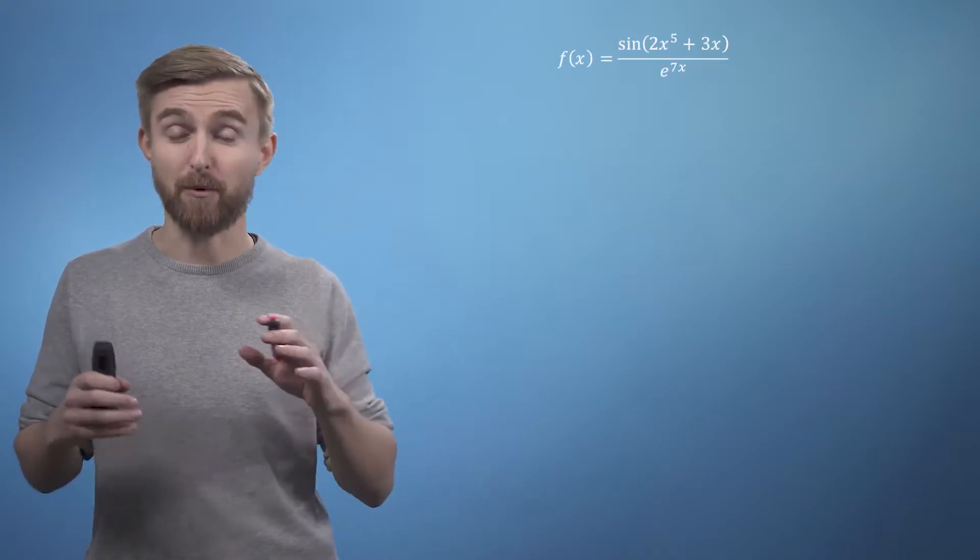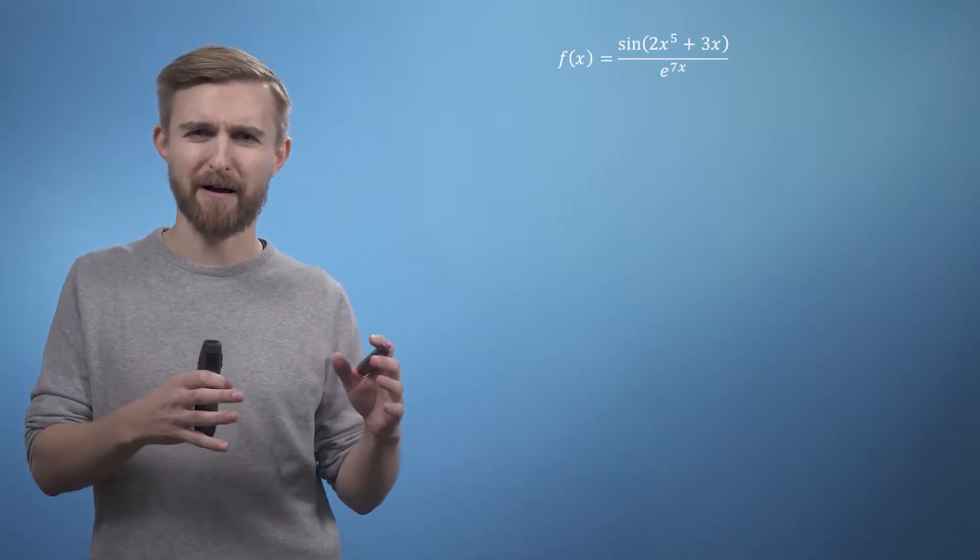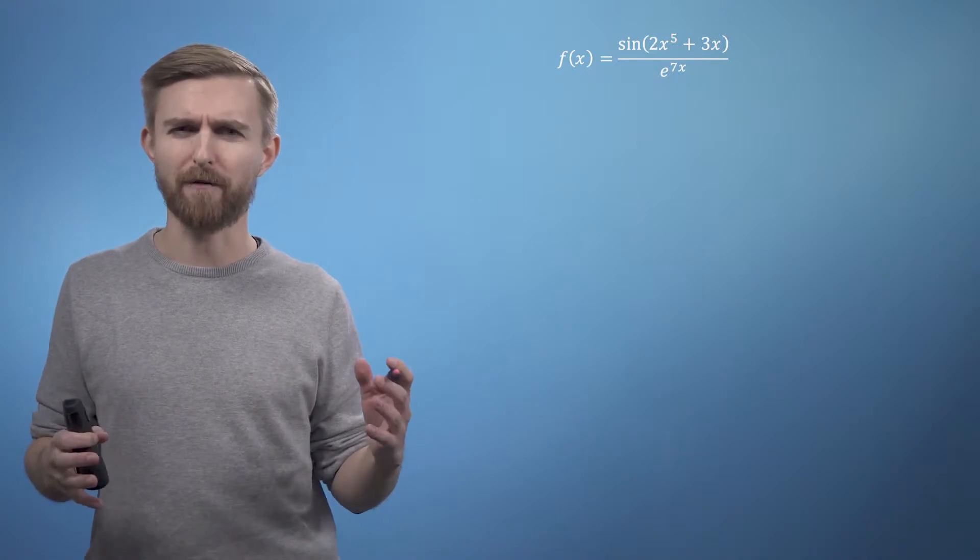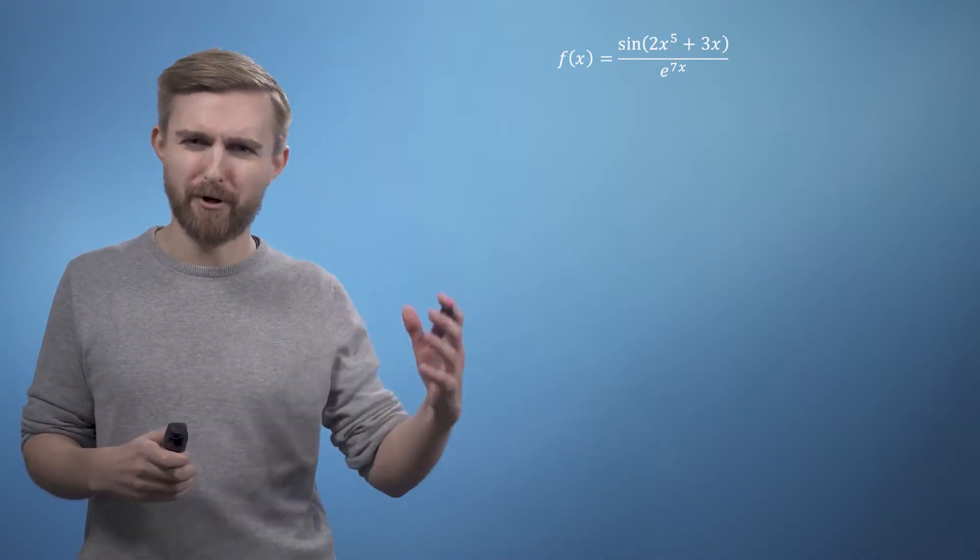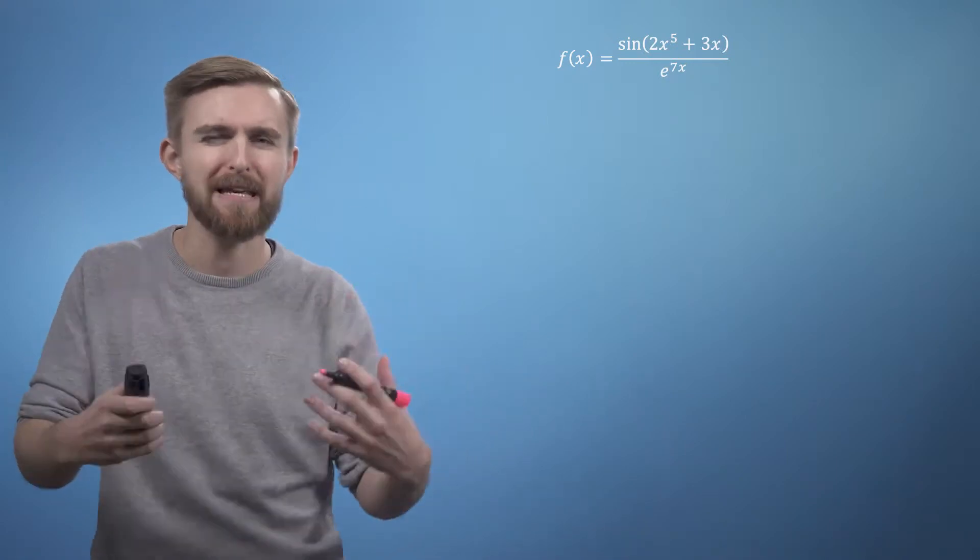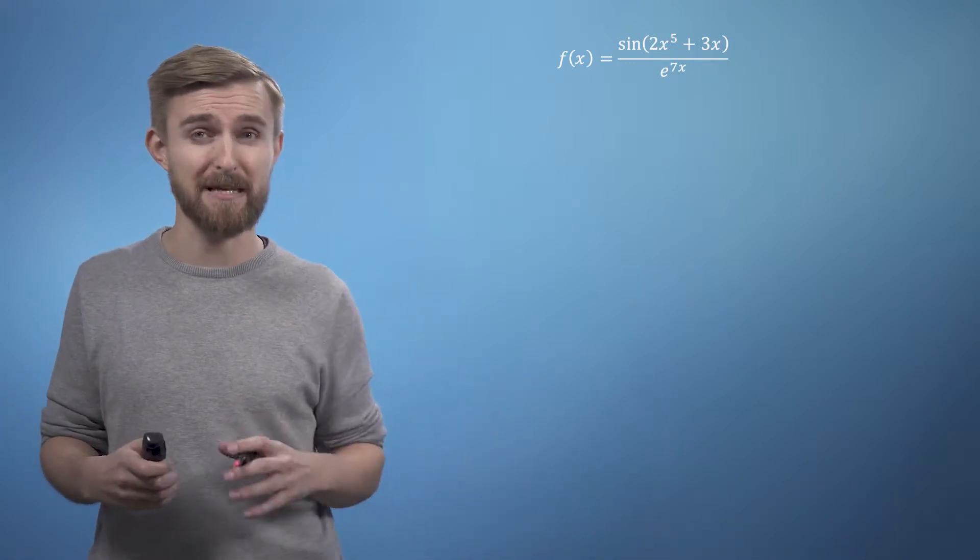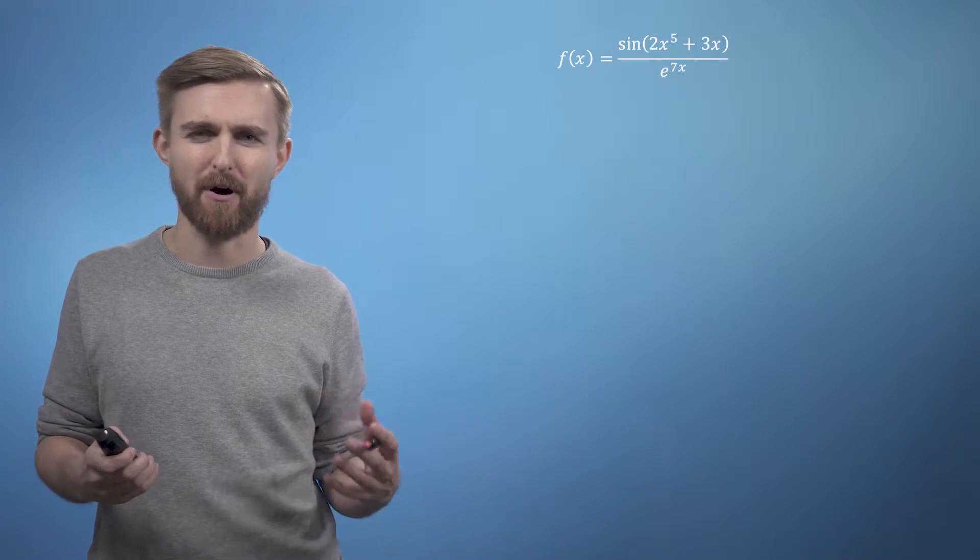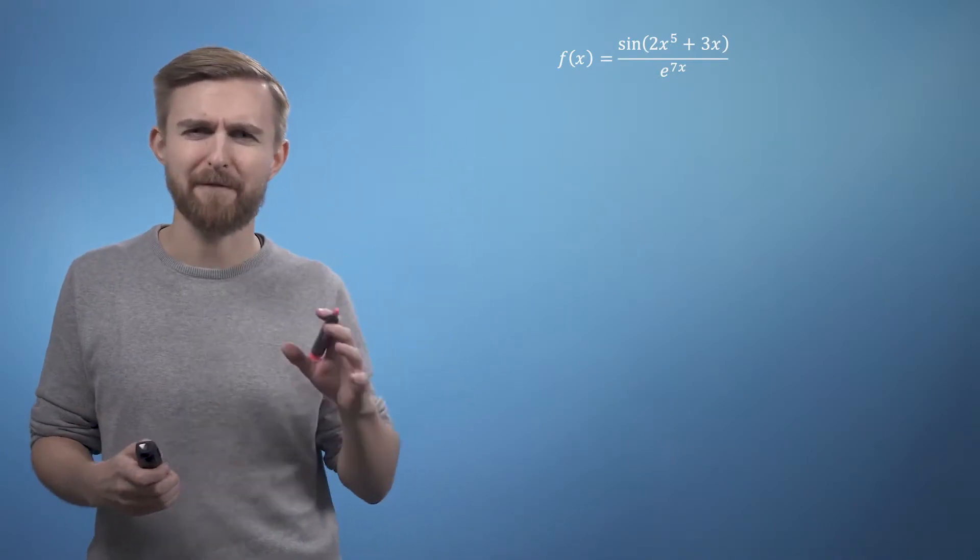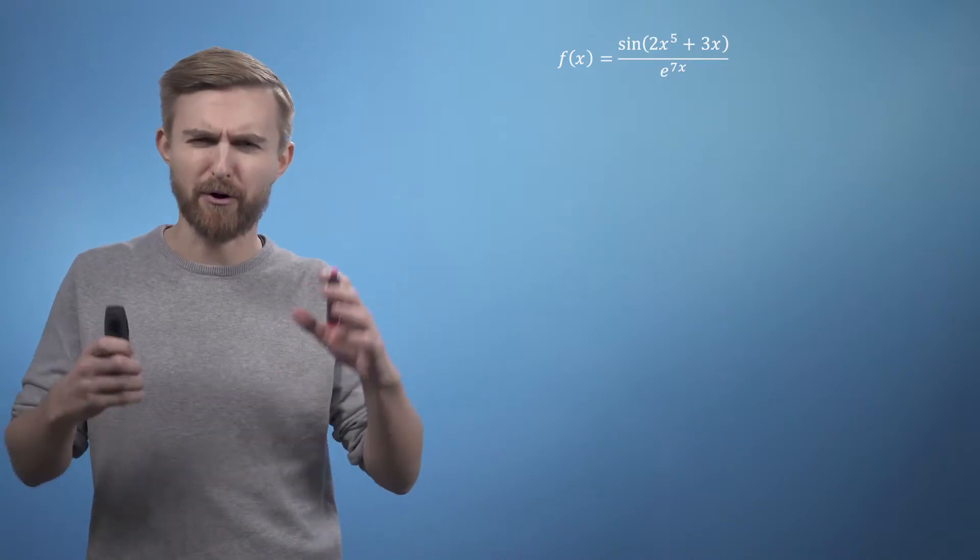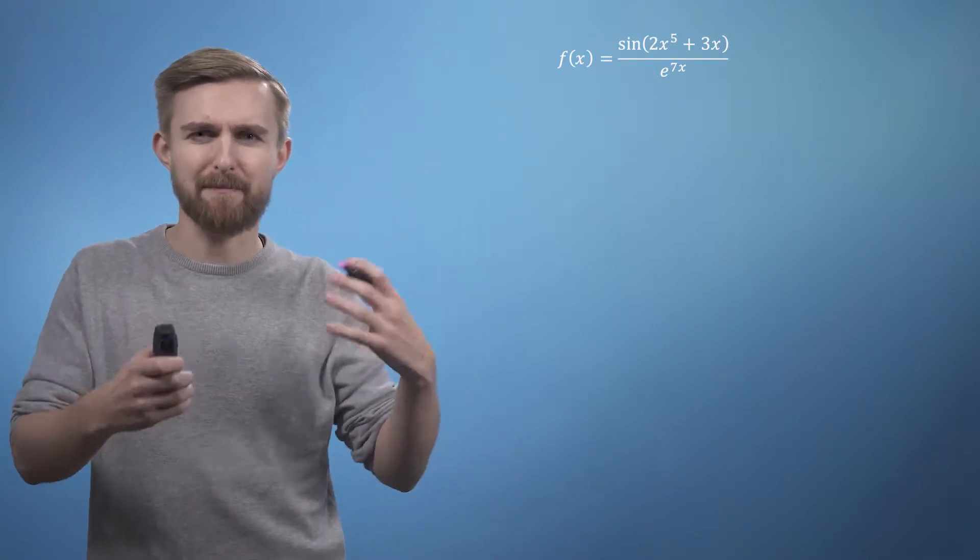Consider the rather nasty function f of x equals sine of 2x to the power of 5 plus 3x, all over e to the 7x. The essence of the sum, product, and chain rules are all about breaking your function down into manageable pieces. So the first thing to spot is that although it is currently expressed as a fraction, we can rewrite f of x as a product by moving the denominator up and raising it to the power of minus 1.